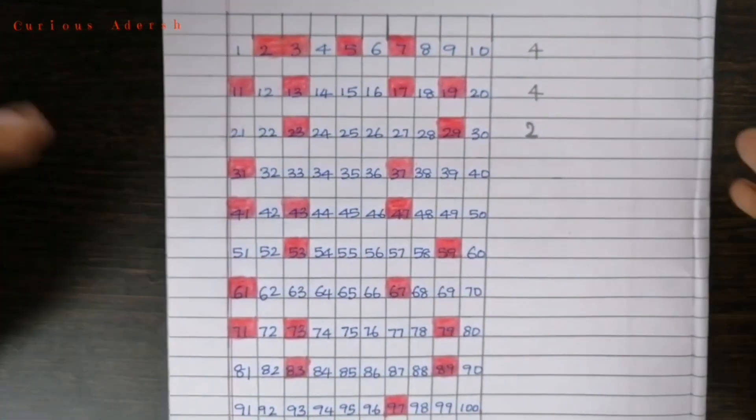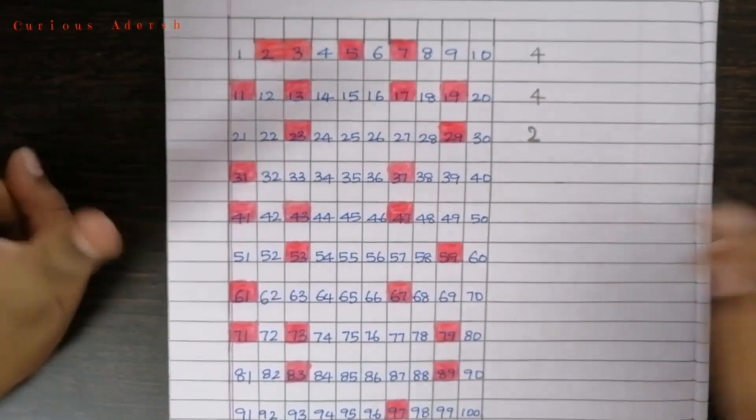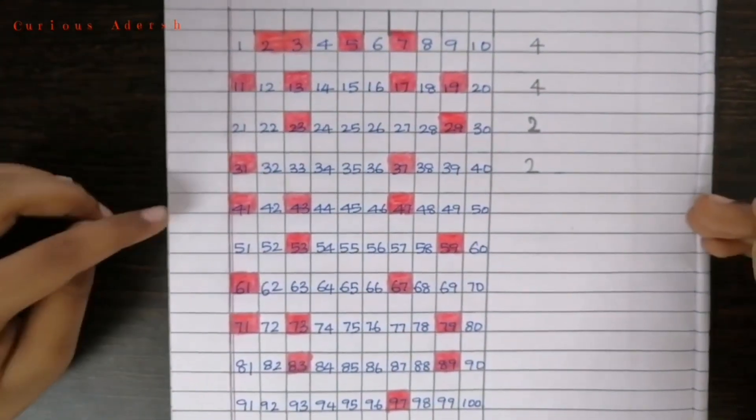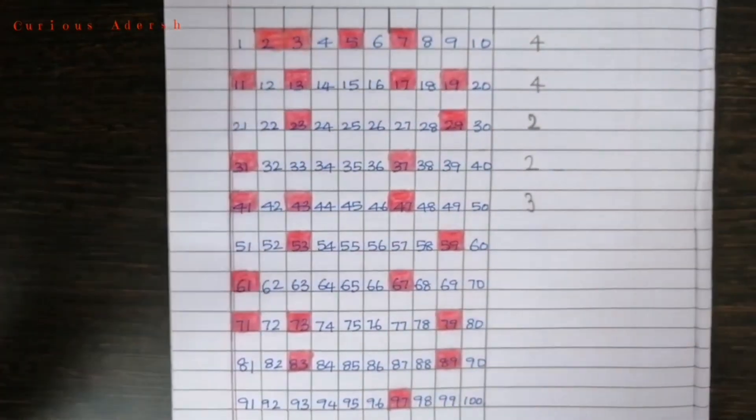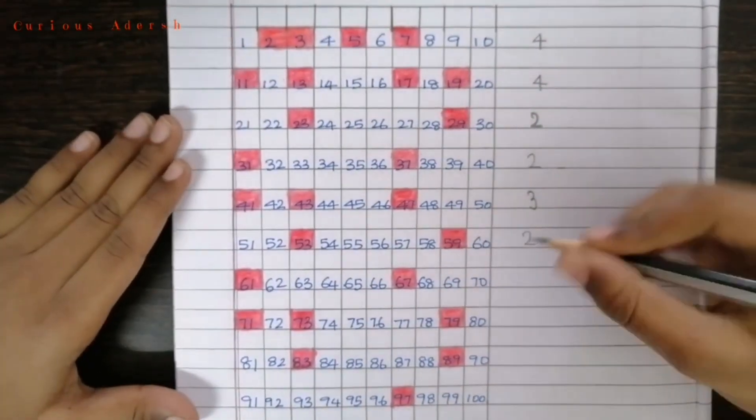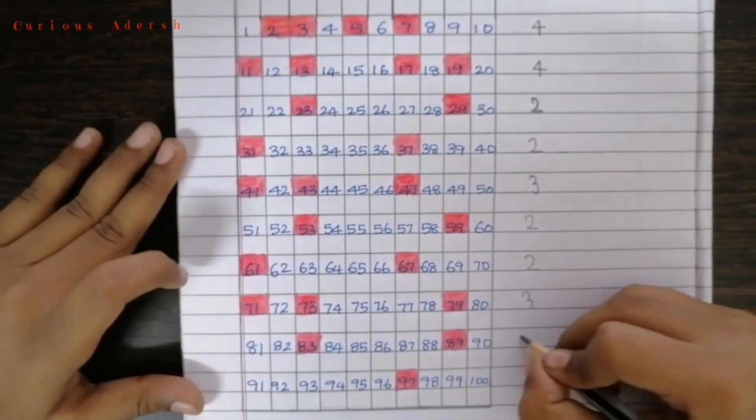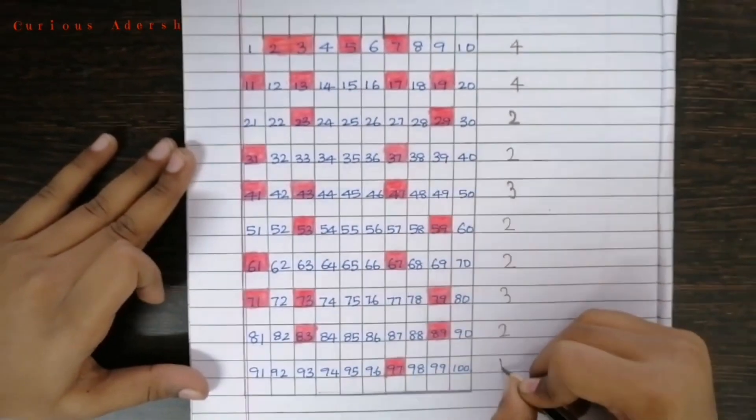How many prime numbers are there here? 2. How many prime numbers are here? 3. Let's write 2, 2, 3, 2, 1.